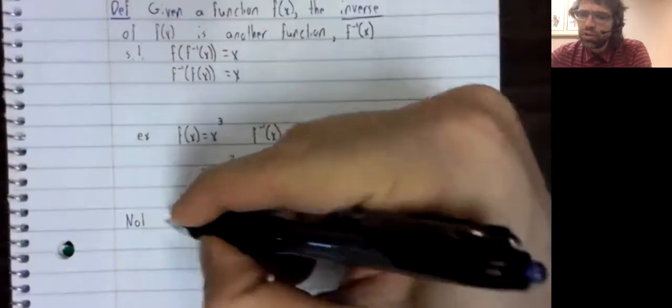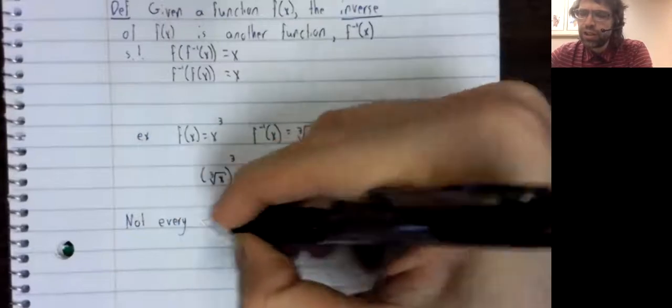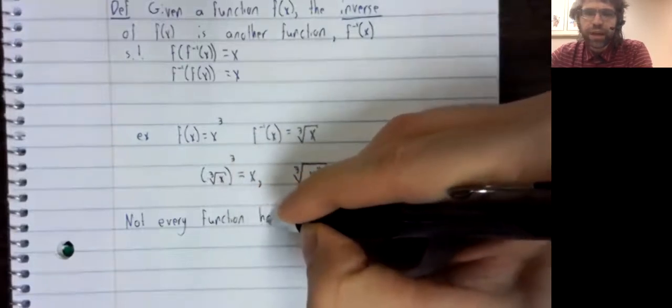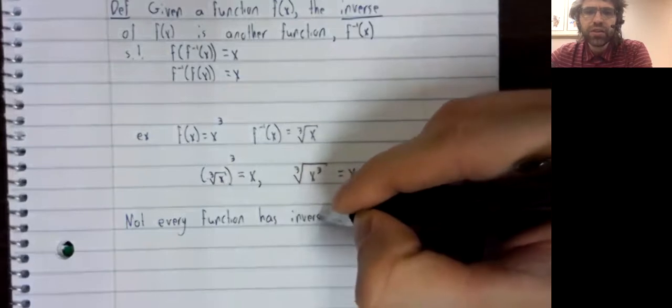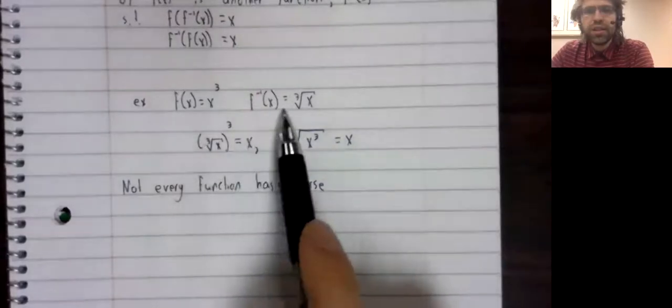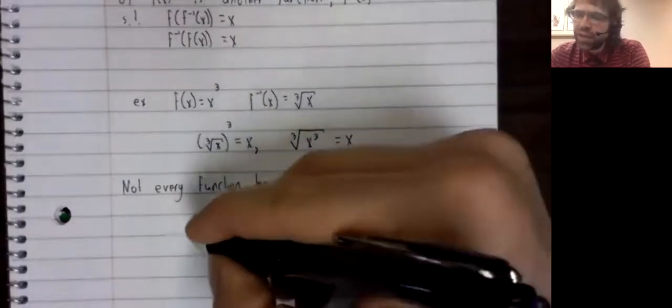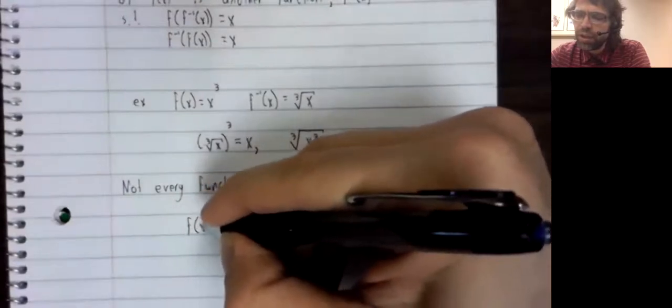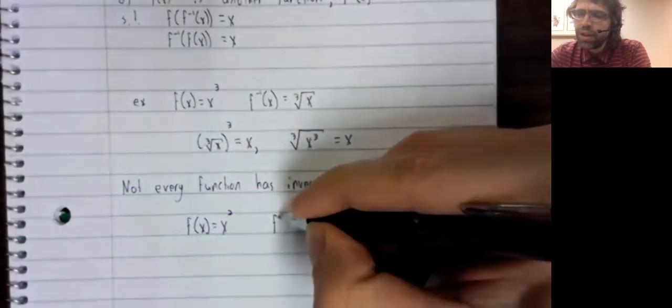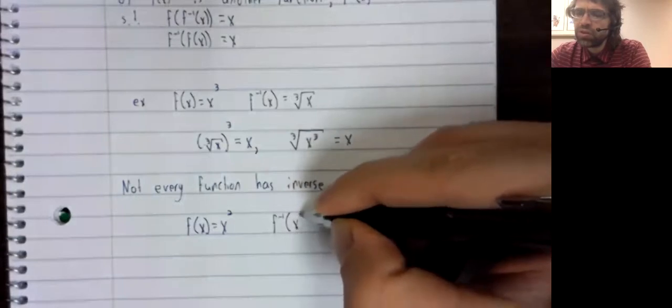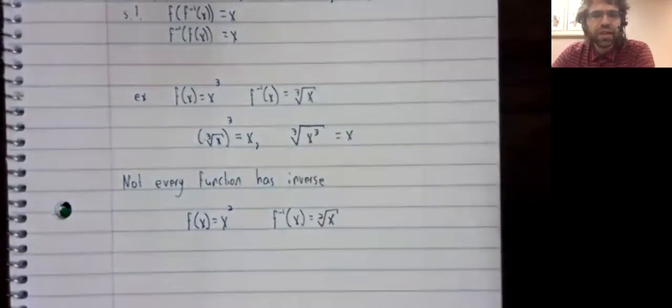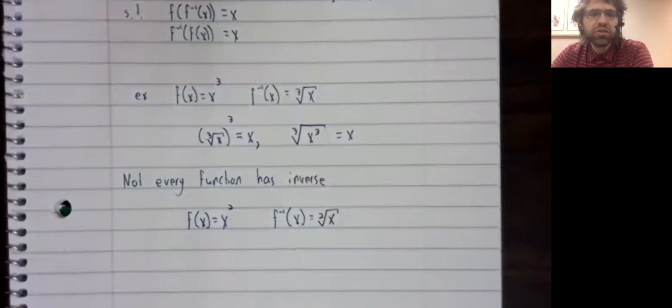Now, not every function has an inverse. Based on what you see here, for example, you might guess the following, that the function x squared has as its inverse the square root of x. And that's a natural thing to think, but it's wrong.